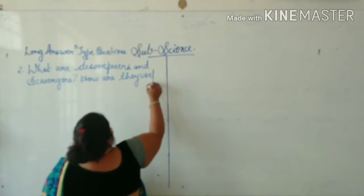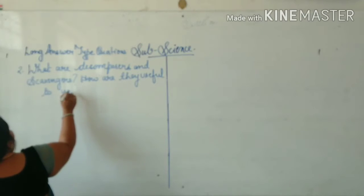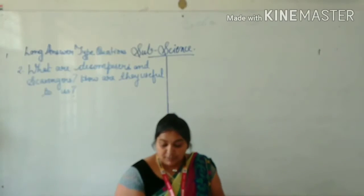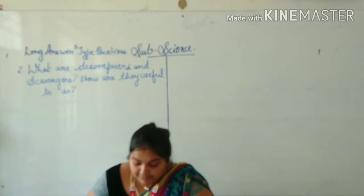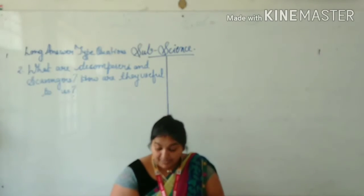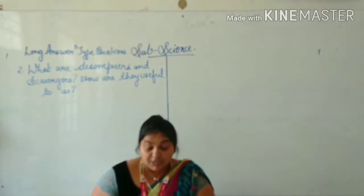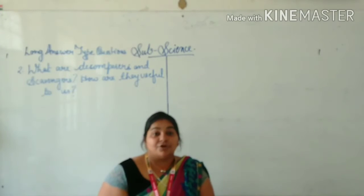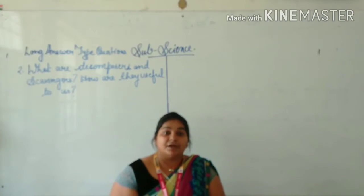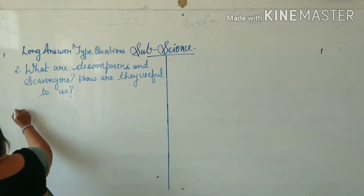How are they useful to us? You already know about decomposers and scavengers. Scavengers are that type of animals that usually depend on dead animals. And decomposers are that type of organisms which feed on and destroy dead animals. They also help us to clean our environment. We are going to discuss the answer now, so let's start writing.